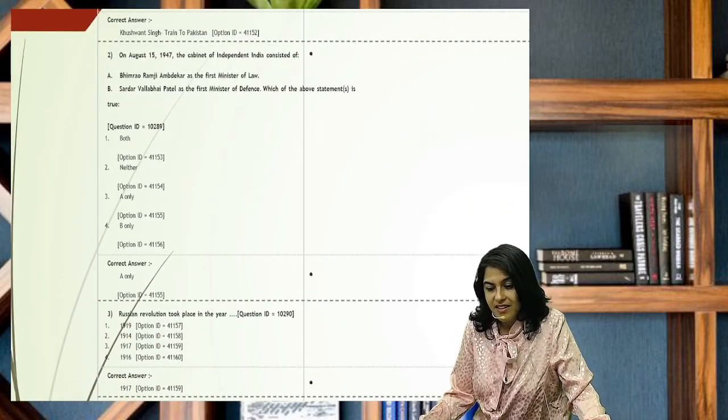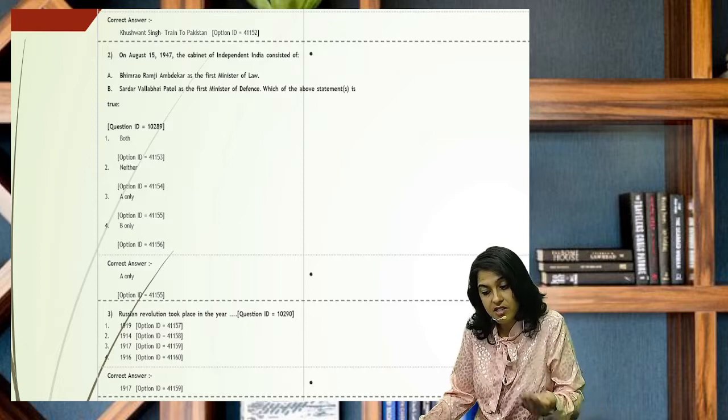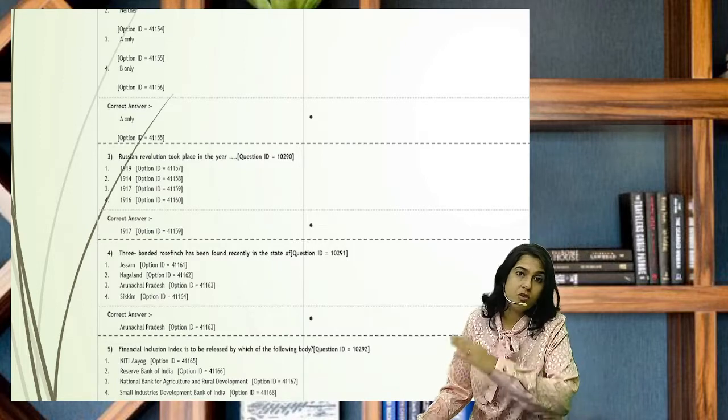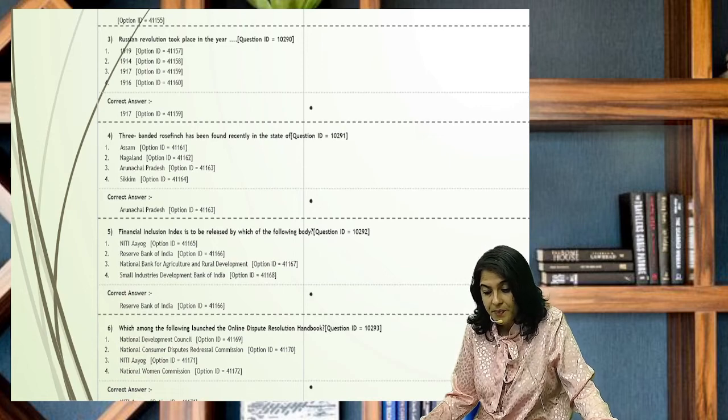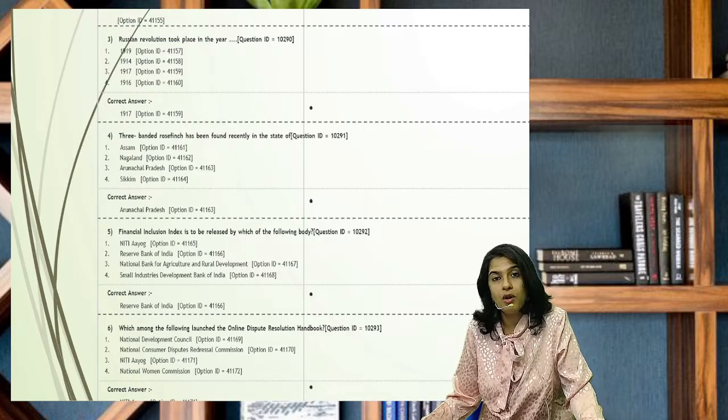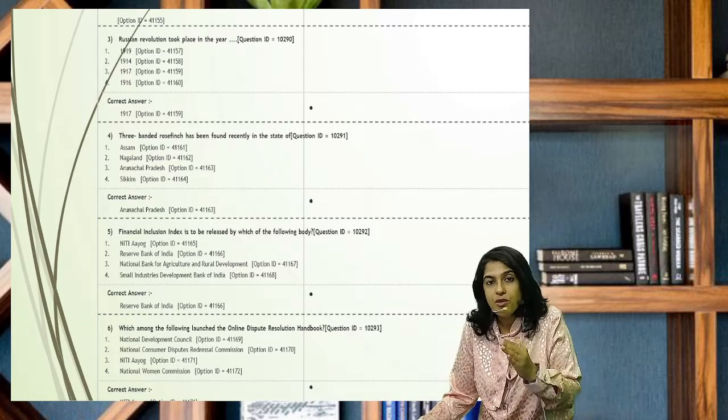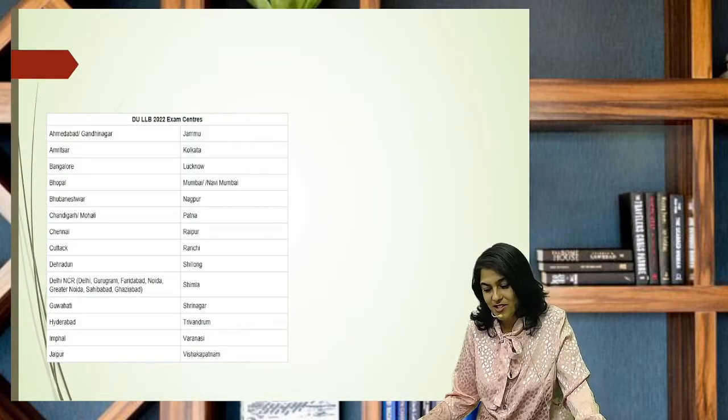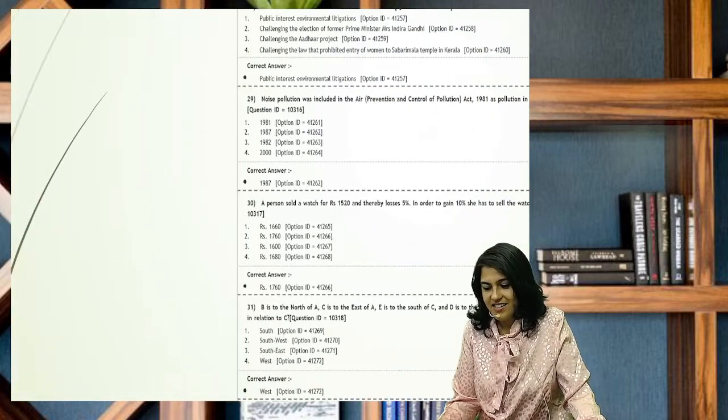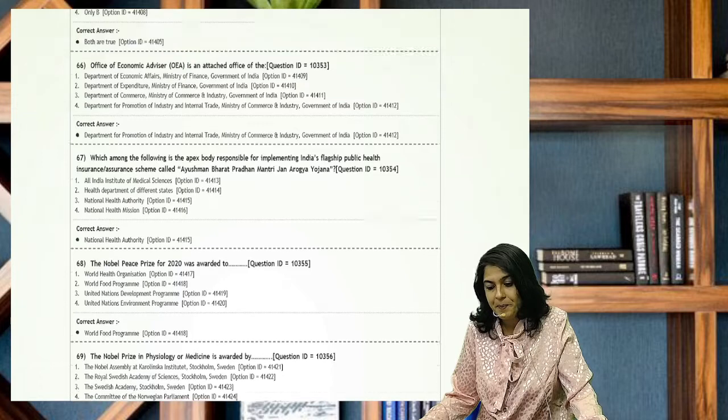Then, on August 15, 1947, the cabinet of independent India consisted of - then they have given the options and you choose the correct option. Russian revolution took place in the year - so again, this is static GK. They're asking about quite old events. Financial inclusion index is to be released by which body? Which among the following launched the online dispute resolution handbook? Again, if you see online dispute resolution handbook, it's also related to legal affairs because it's talking about dispute.